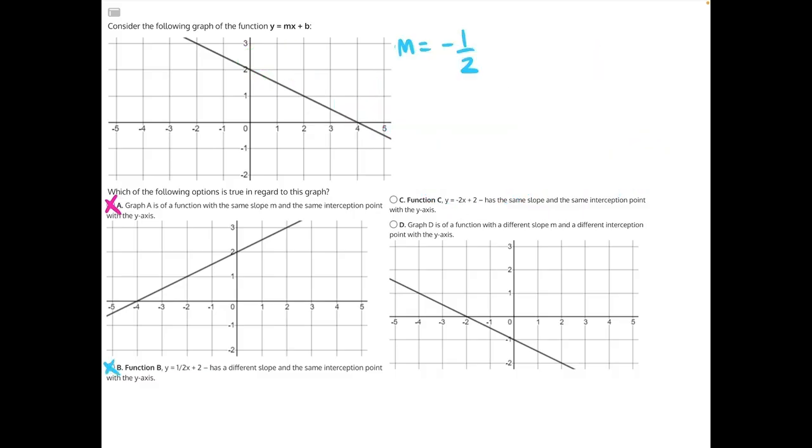For answer choice C, function C, y equals negative 2x plus 2, has the same slope and same interception point with the y-axis. The interception point is the same for both the original graph and this function. However, the slopes are different. Negative 2 is not the same as negative 1 half. So answer choice C is incorrect.